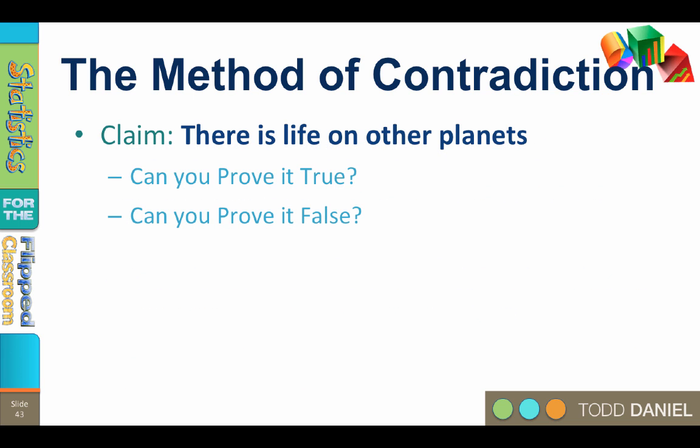Let's start with a statement that is not falsifiable. The claim is that there is life on other planets. How could you prove that true? Pretty simple — find life on another planet. But could you prove this statement false? We go to one planet, no life. We go to another planet, and another — still no life. We go to all the planets in our solar system, we even go to Pluto, no life. Then we go to other solar systems, other star systems, other galaxies far, far away — still no life on other planets. Despite all of that failure, someone can always claim that we just need to look at more planets. That statement can never be proven false.